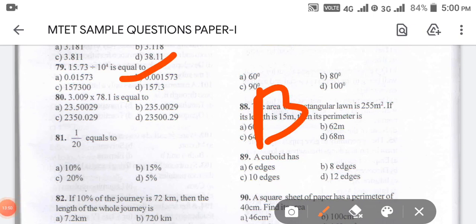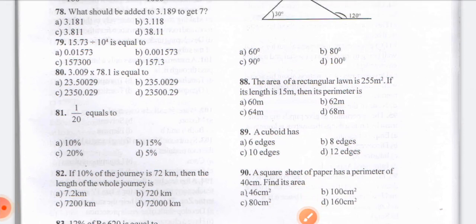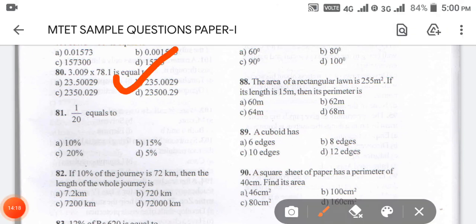Coming to question number 80: 3.009 into 78.1 is equal to? Four options are given. When I did the multiplication, the answer is coming as 235.0029. So the answer for 80 is option D.